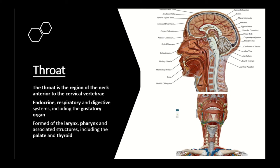Now let's talk about the throat, which is the region of the neck anterior to the cervical vertebrae. It comprises structures pertaining to the endocrine, respiratory, and digestive systems. We will briefly review the anatomy of the larynx, pharynx, palate, and the thyroid gland, using illustrations showing the head and neck region from the front and a mid-sagittal section.